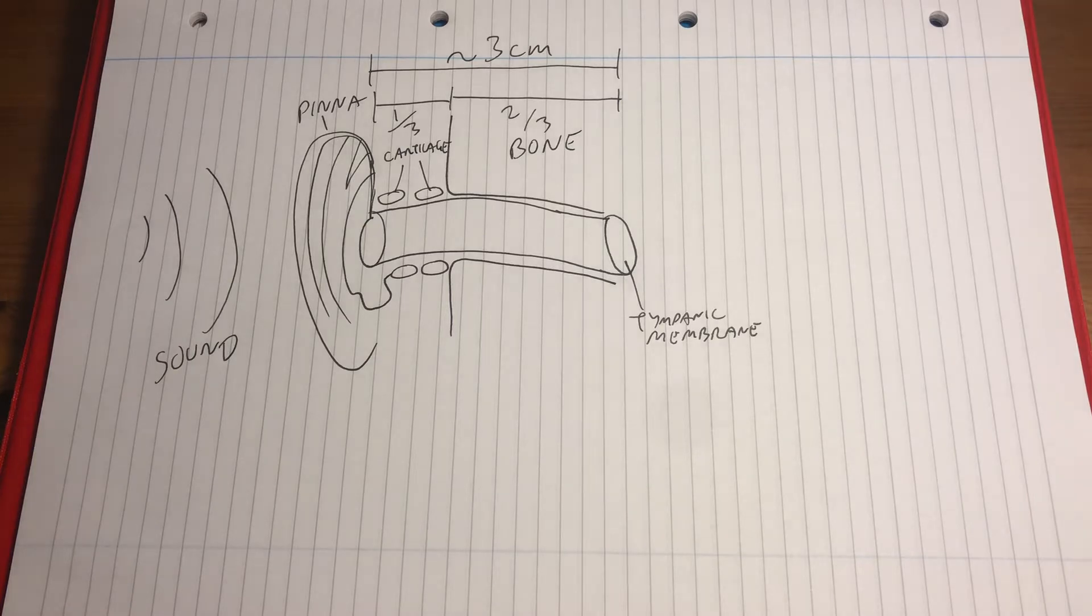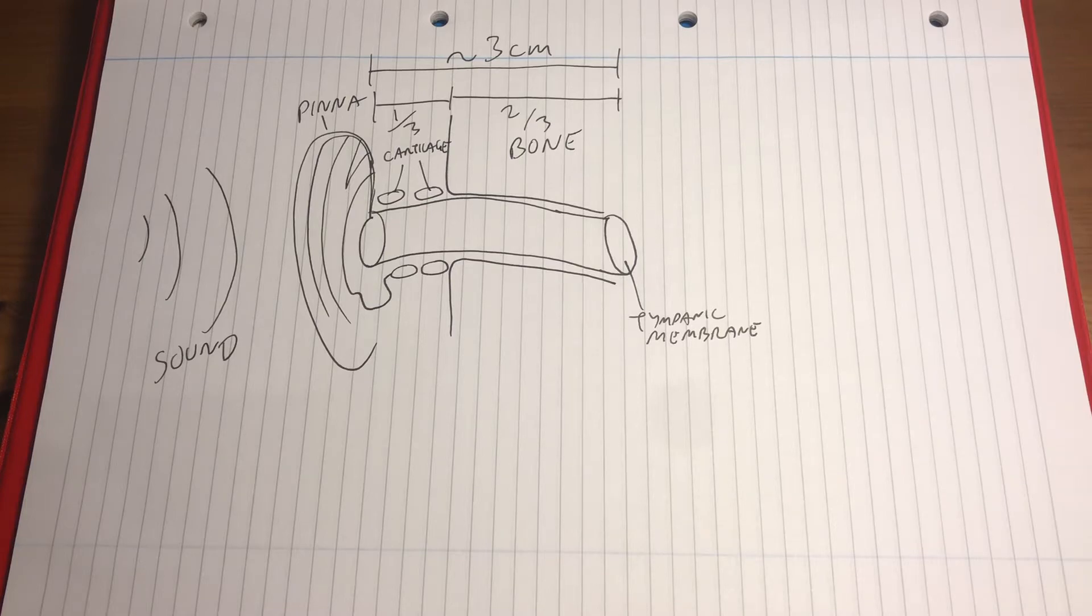The canal itself has a curved or sigmoid shape. When looking laterally straight down the canal, you'll see that it passes initially superior and anterior, and then superior and posterior, and then it turns down inferior and anterior.